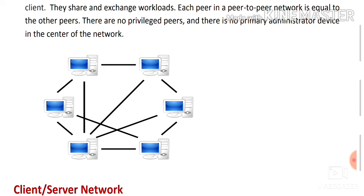There is also a drawback: if one computer slows down, the effect is felt across the whole network, and the speed of the entire network is impacted because of that single computer. So there are advantages and disadvantages to the peer-to-peer network.